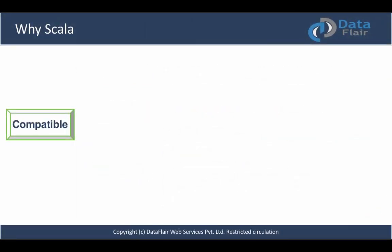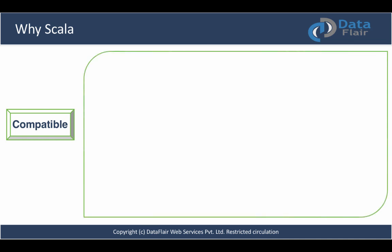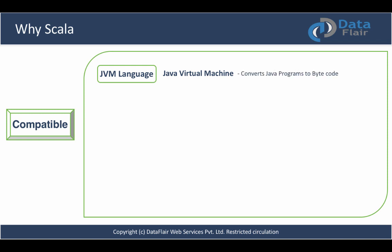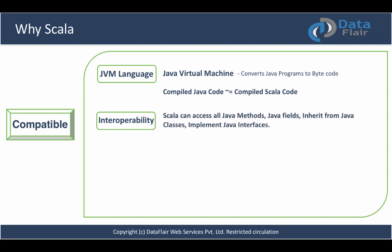Scala is compatible. Scala is a JVM language. JVM stands for Java Virtual Machine, which converts your Java programs to bytecode so that the machine can understand and perform operations with your code. Scala is a language which runs on the JVM and compiles to JVM bytecode, so you won't see much difference between compiled Java or Scala code. Scala is designed to interoperate with Java seamlessly — you can access all Java methods, Java's fields, inherit from Java classes, implement Java's interfaces, and everything will work smoothly.